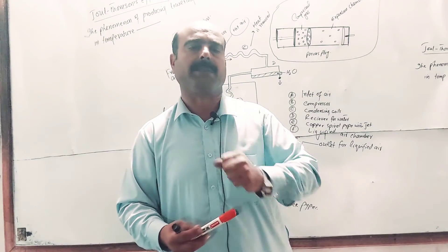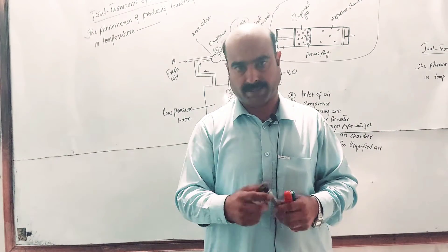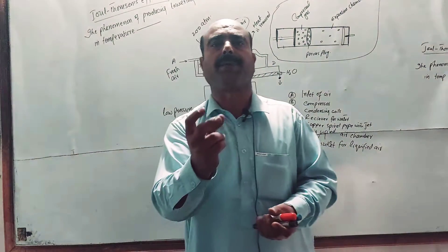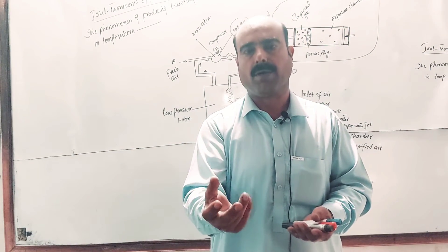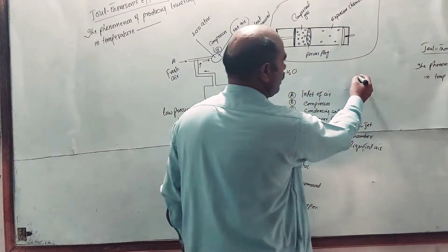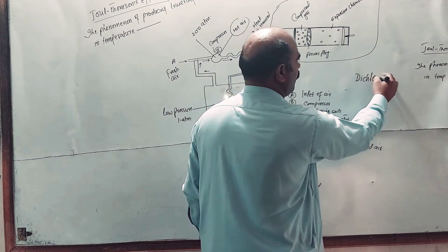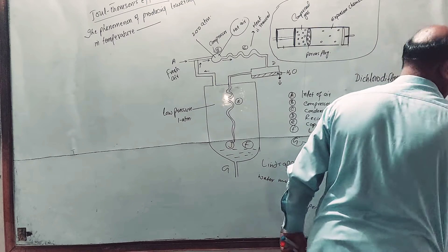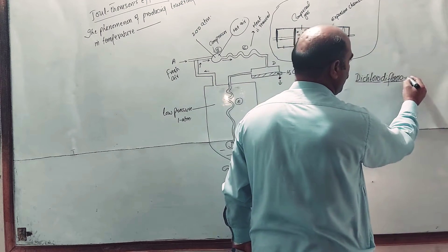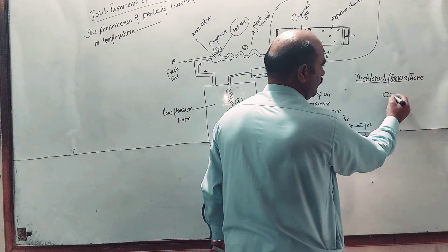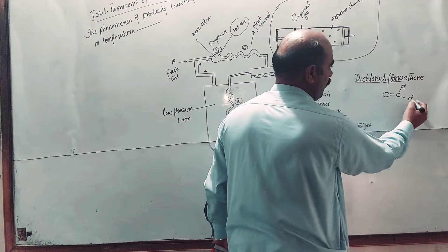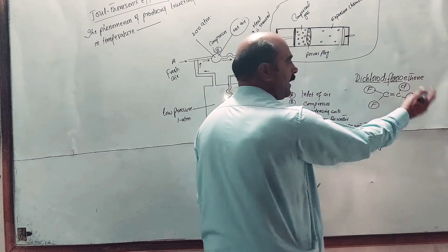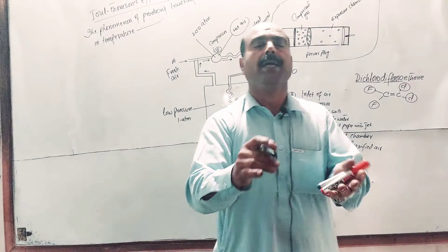An everyday example is the refrigerator. In a fridge, a compressor is used, and the gas used is Freon gas — dichlorodifluoroethylene (CCl₂F₂) — which has two carbon atoms connected by a double bond. This Freon gas is used in the refrigeration cycle.